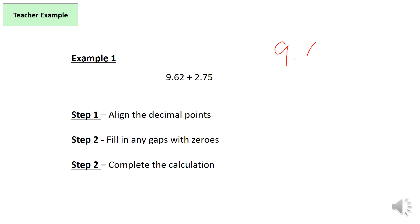9.62 plus 2.75. Make sure you align them in column method and make sure the decimal points are aligned as well.